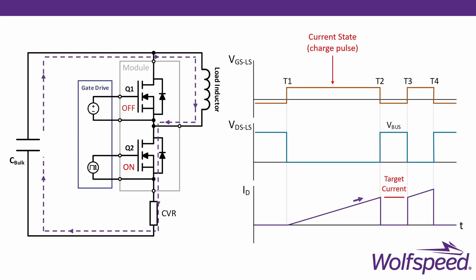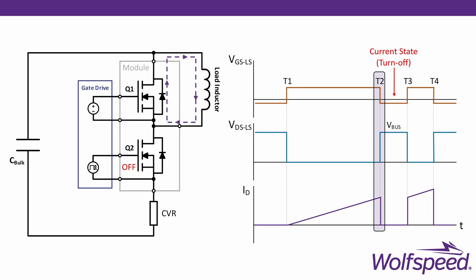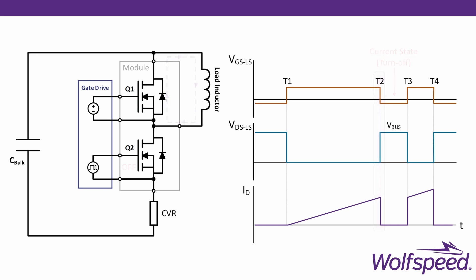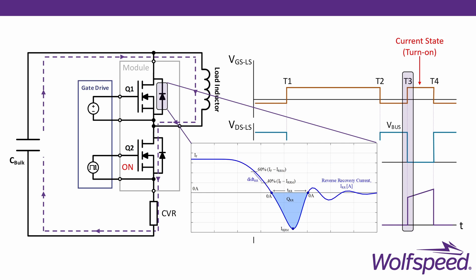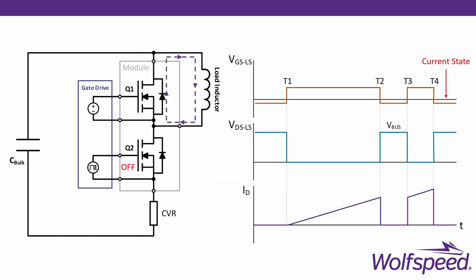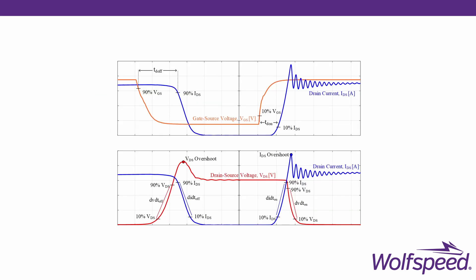Once our desired load current is reached, we turn off the low side device, and this is known as the turn-off event. During this time, current will freewheel through both the load inductor and the high side diode. After a few microseconds, we simply turn on the low side device again. This is known as the turn-on event, and it occurs at approximately the same voltage and current as the turn-off event. Since the low side MOSFET is now conducting the inductor current, the high side body diode current will fall to zero. The non-idealities of the diode will cause what is called a reverse recovery event. Finally, after a few more microseconds, we turn off the low side device one last time and conclude the test. We can then analyze the turn-off and turn-on waveforms to see how the device behaved under these conditions.